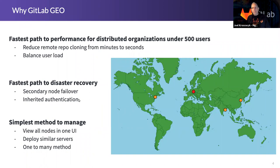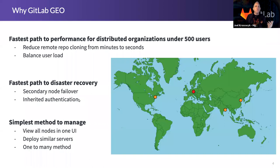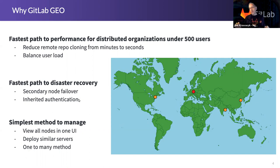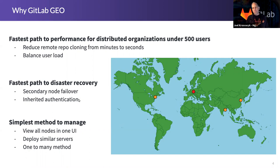It's also the simplest method to manage. You can see all these nodes in a single UI. The servers that you deploy are basically identical nodes. You can deploy the same server type in four different locations, so you're not trying to figure out what to deploy where. It's a single omnibus-based rollout. And there's that one-to-many kind of deployment method where the primary node is synchronizing with those remote nodes in the same way. We're not doing node-to-node on the secondary — it's a primary-to-secondary, one-to-many type approach. So it really is simple from a management perspective.